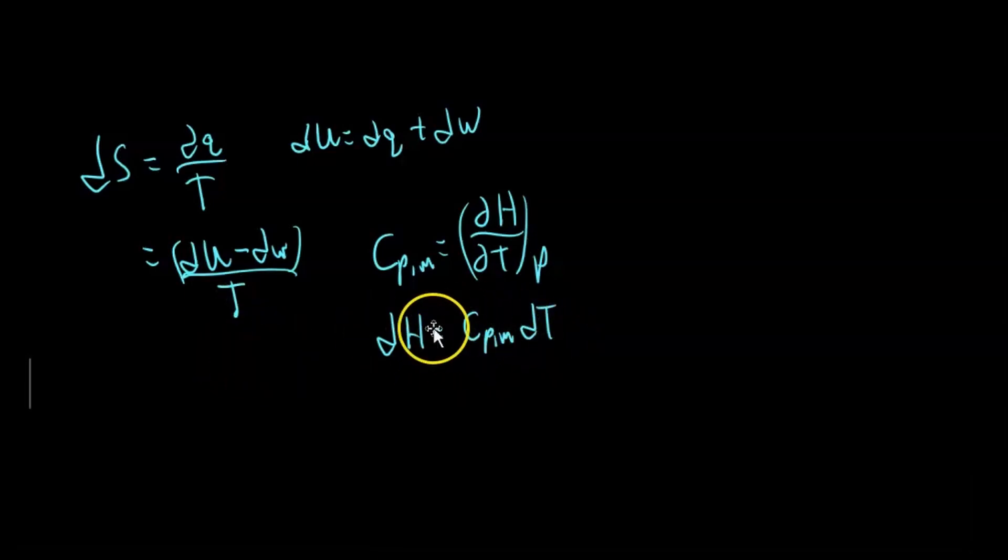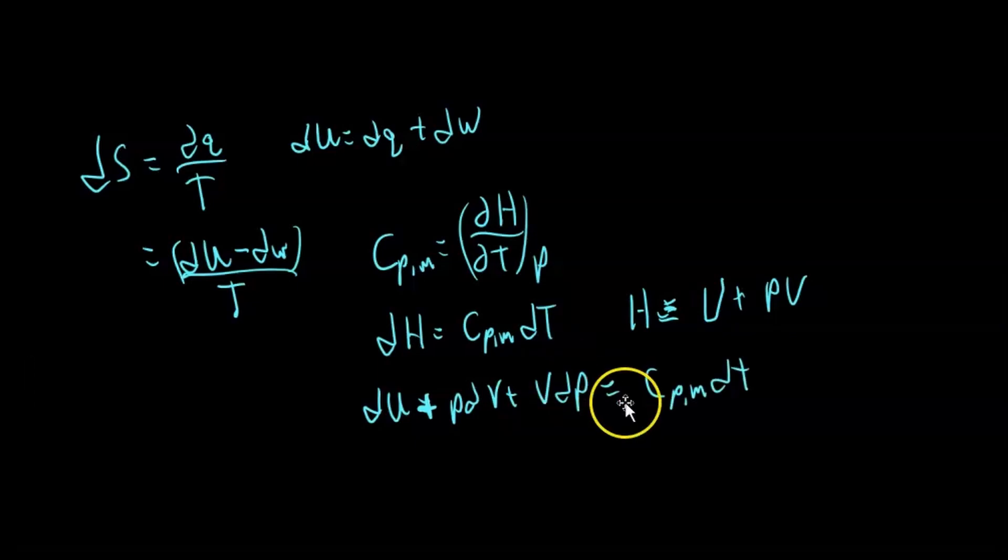What is dh? If you remember, the definition of enthalpy is U plus PV. So dh has to be equal to du plus pdv plus vdp, and all of that equals Cp,m dT. I took the differential of enthalpy using the product rule, and at constant pressure this vdp term is zero.